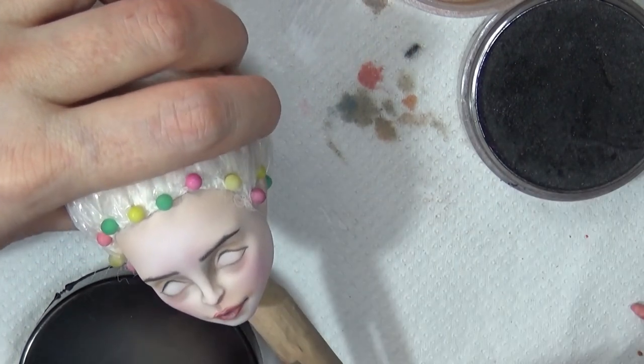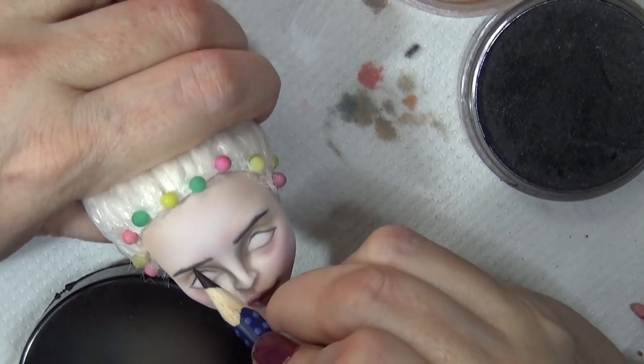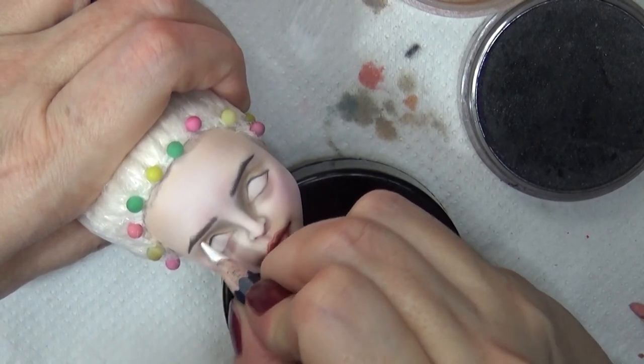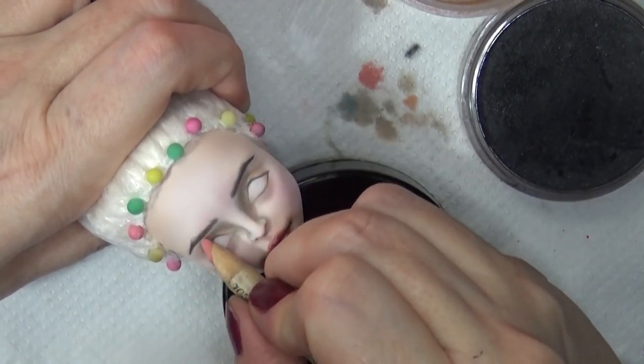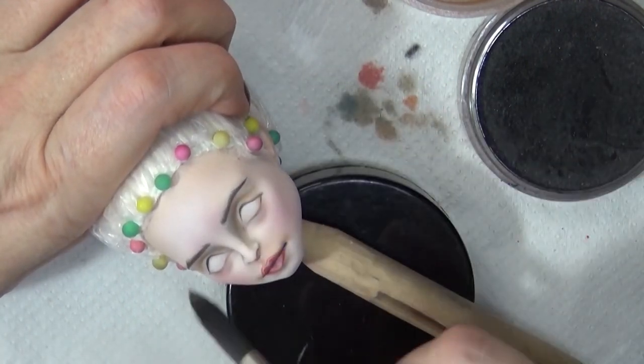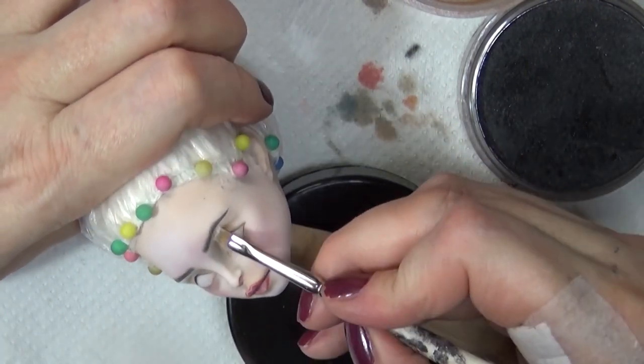For her eyebrows, I used a little bit of Panpastel first and added the shape, then erased to define the shape, and then added the individual hairlines there. Then I clean it up with one of my favorite erasers.